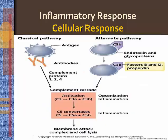Major functions of the complement system are enhanced phagocytosis, increased vascular permeability, chemotaxis, and cellular lysis. The complement system is a major mediator of the inflammatory response. In autoimmune disorders, healthy tissue can be damaged by complement activation and the resulting inflammatory response. Examples include rheumatoid arthritis and systemic lupus erythematosus.